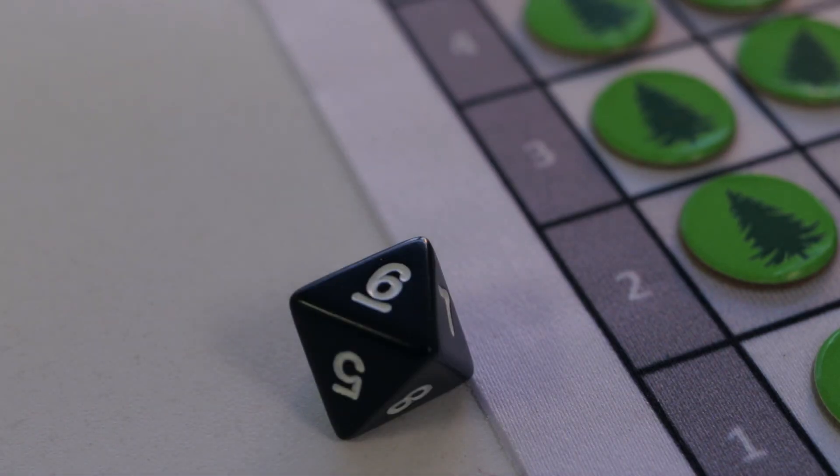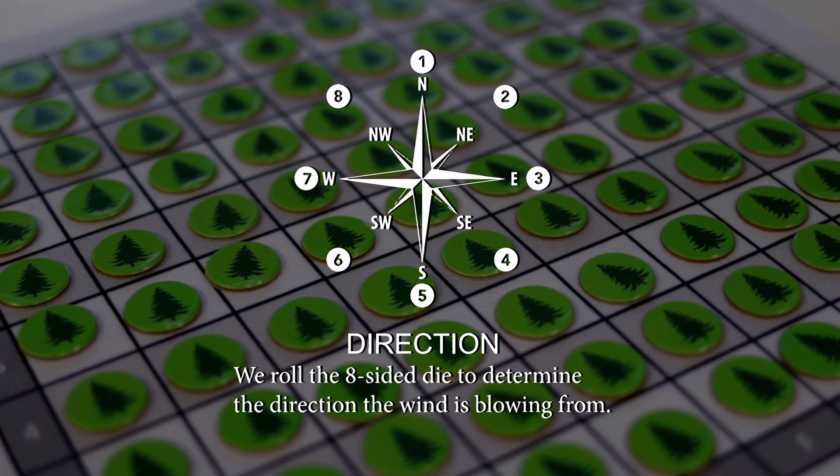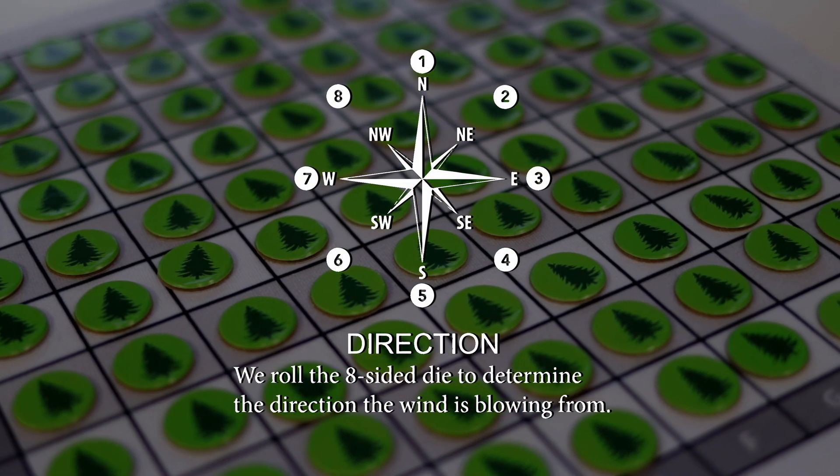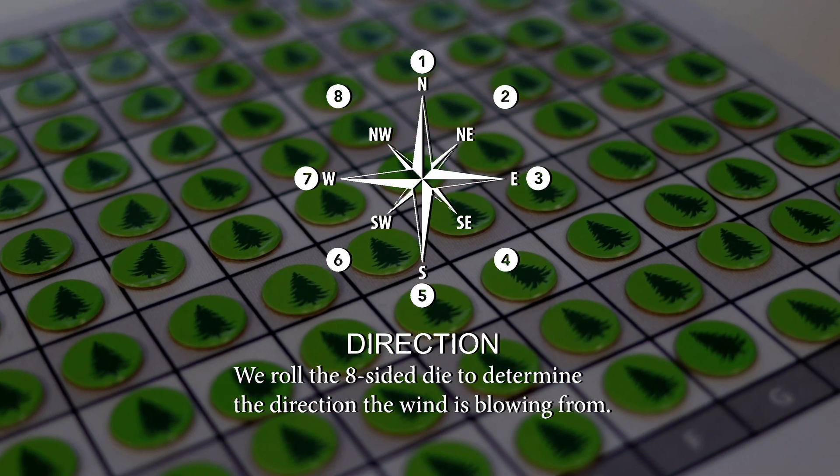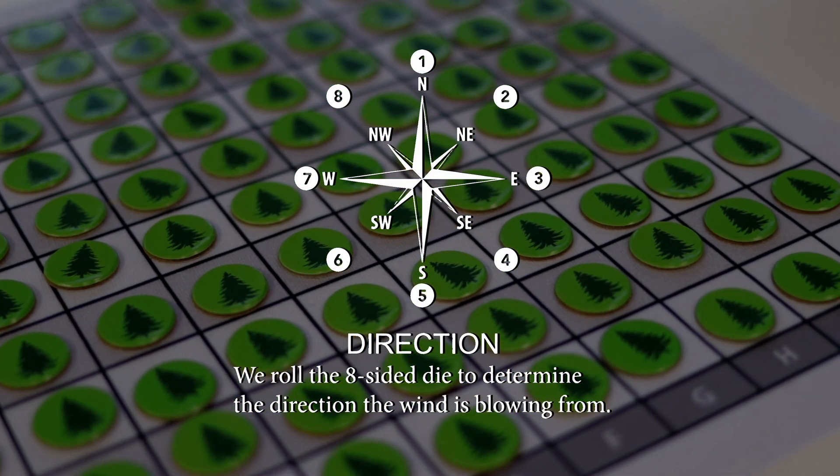We rolled a six. Use this compass that can be found on page 80 in the curriculum to determine which direction the wind is coming from. Rolling a six means the wind is coming from the southwest.